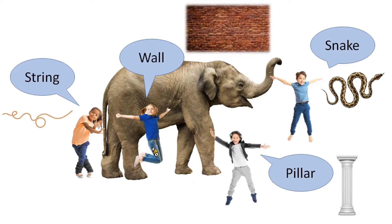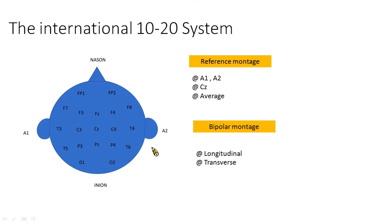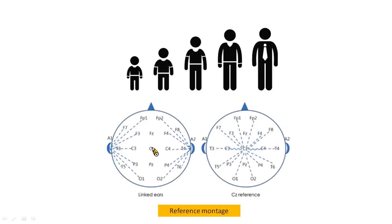This is the same when we are reading EEG. We use the international 10-20 system and set the montage into two groups. The first group is the reference montage and the second group is the bipolar montage. The reference montage compares each electrode potential to a standard — most commonly A1/A2 (left and right ear) or CZ (top middle of the head). The average reference montage calculates the average of all electrode potentials as the reference. The bipolar montage is mainly divided into longitudinal and transverse montage.